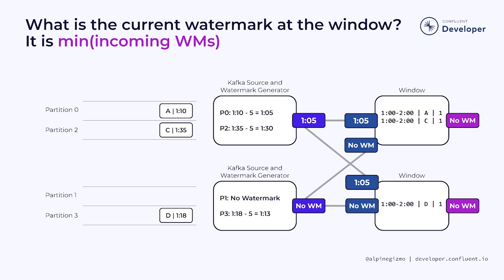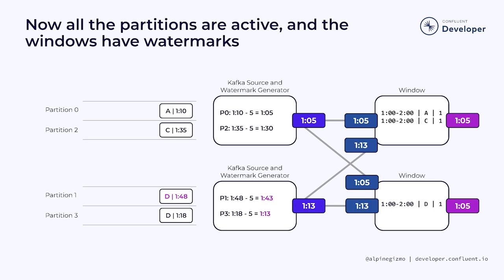This is because no events have been processed for partition 1. As soon as partition 1 has an event, the second source can produce a good watermark which will flow downstream. That watermark is 1:13, because that is the smaller of the two per-partition watermarks in this source. Now the watermarks for both instances of the window operator have advanced. But until these watermarks reach 2 o'clock, the results being accumulated inside the windows won't be emitted.